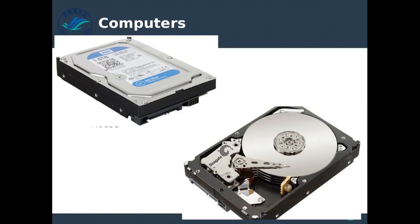The SATA connector connects to the motherboard and the motherboard is then able to see the hard drive. If we opened up this case, inside we would see a bunch of disks that look kind of like CDs but made of metal. In a hard disk drive, we store data magnetically. There's an arm with a head that can change the magnetic fields on the metal disk, and by changing those magnetic fields we store ones and zeros.